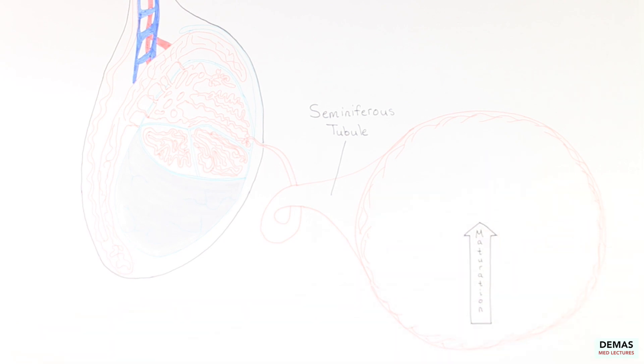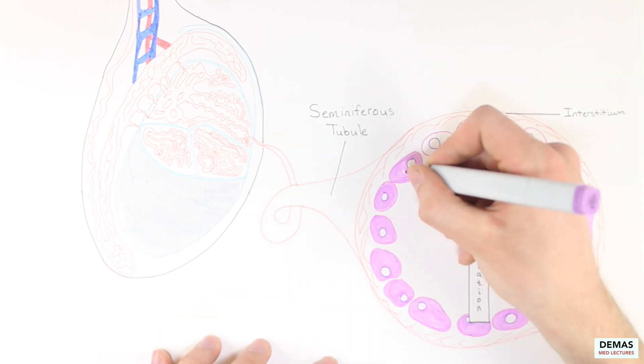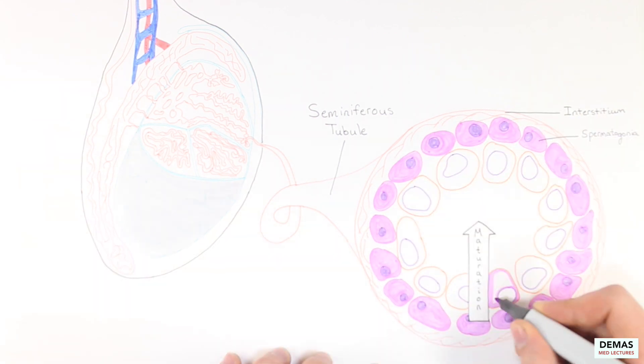The process of maturation proceeds from outside to inside the tube. The most exterior cells, or the cells just adjacent to the interstitium, are the spermatogonia, which are diploid cells. These diploid cells can either enter meiosis to form haploid cells, or can undergo mitosis to replenish the diploid cells, so sperm can continue to be generated throughout the lifetime of a male.